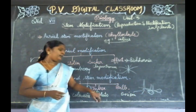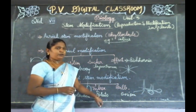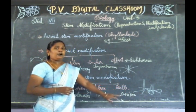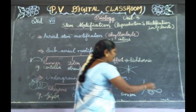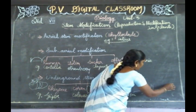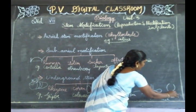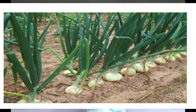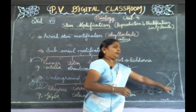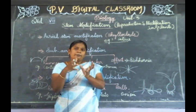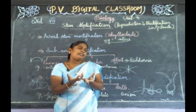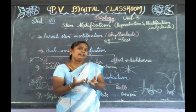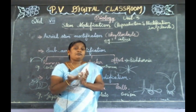The next one is the bulb modification — for example, onion and garlic. The stem region is modified as a bulb-like structure. It is doing the function of storage. Most stem modifications are doing the function of storage.